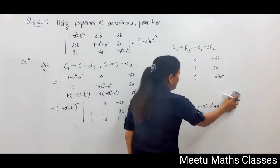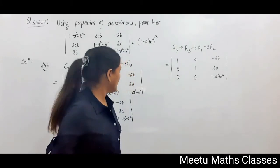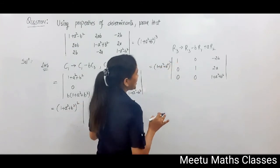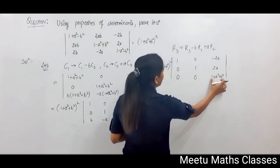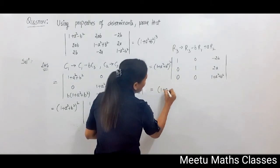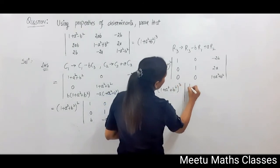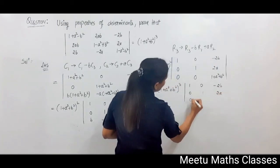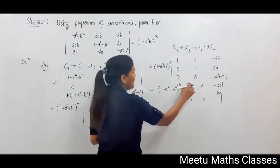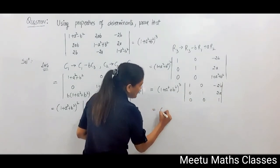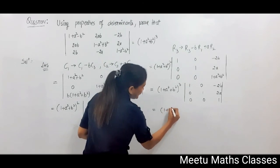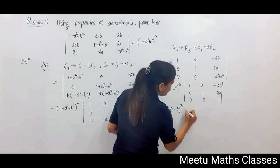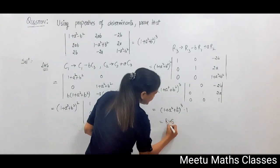Now the factor outside is (1 + a² + b²) whole squared. We can take (1 + a² + b²) common from R3 again, giving (1 + a² + b²) cubed. You are left with the determinant having rows: 1, 0, b; 0, 1, 2a; 0, 0, 1. Now expand the determinant along column 1 — you get (1 + a² + b²)³ and the remaining determinant equals 1. So this equals the right-hand side.